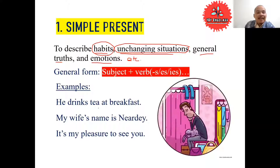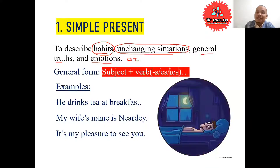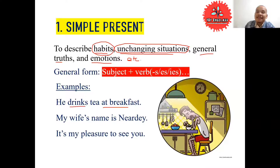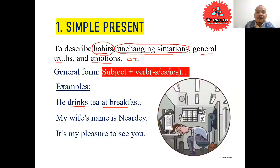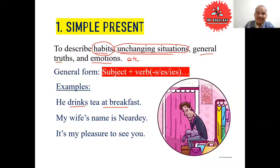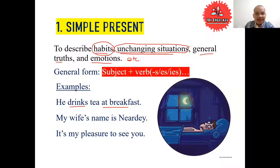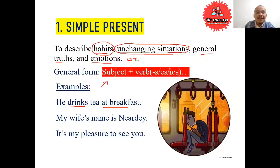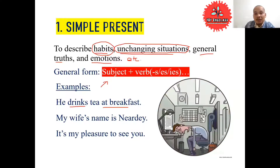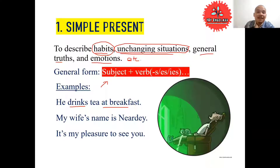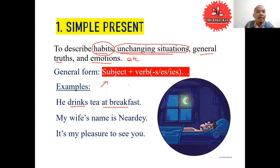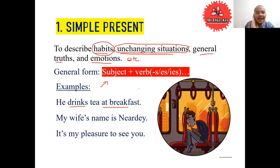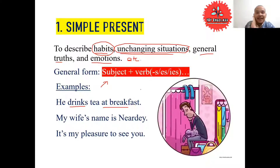For example: 'He drinks tea at breakfast.' So it talks about his habit — he always drinks tea at breakfast. Now regarding the verb form, when we use first person and second person, we don't add S, ES, or change Y to IES.